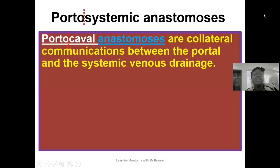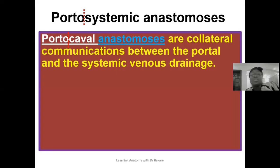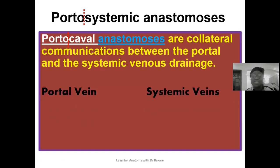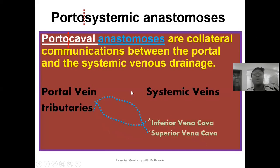The portosystemic anastomosis can also be referred to as the porto-caval anastomosis. There is a communication network created between the portal venous system and also the systemic venous drainage. Because the systemic venous drainage is structurally made up of the superior and the inferior vena cava, the portosystemic anastomosis can also be referred to as the porto-caval anastomosis — a collateral communication network between the portal venous system and the systemic venous drainage.